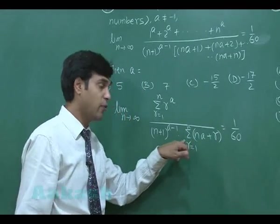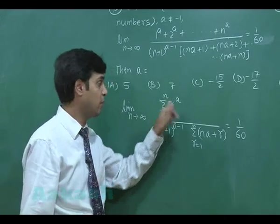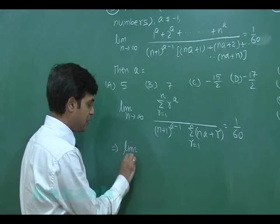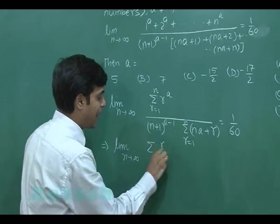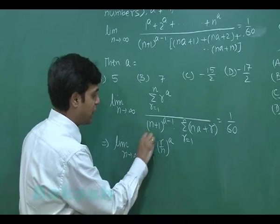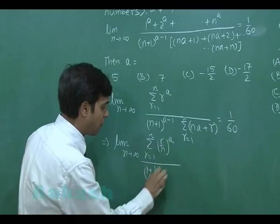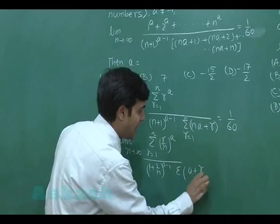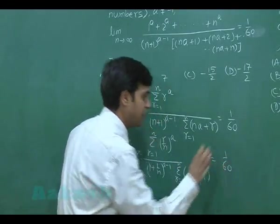We can take n common from the first bracket and n to the power (a minus 1) common from the second bracket and put it into the numerator, so that we get the expression changing to: limit n approaching infinity, summation (r/n) to the power a for r equals 1 to n, divided by (1 plus 1/n) to the power (a minus 1), multiplied by summation (a plus r/n) for r equals 1 to n, equals 1 by 60.